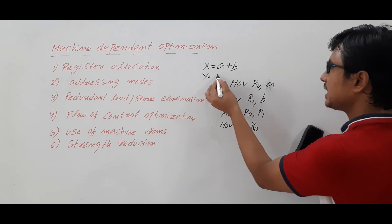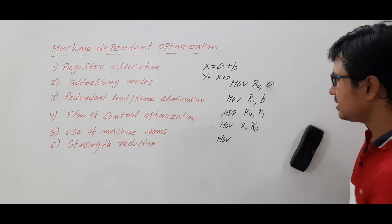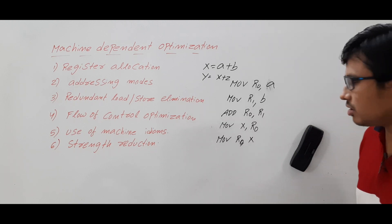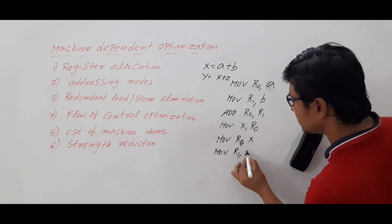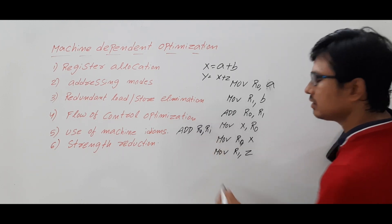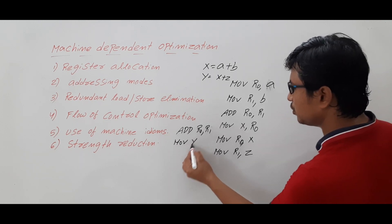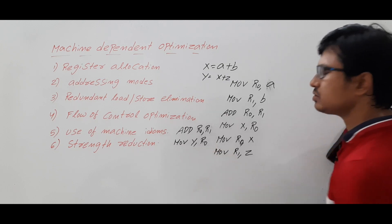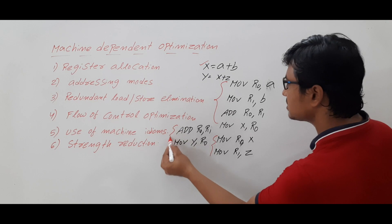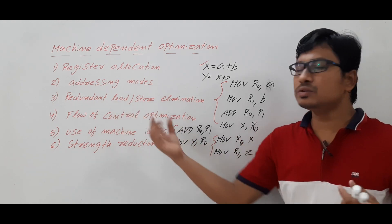Now suppose you have another instruction y = x + z. For this, you would normally write: MOVE r0, x; MOVE r1, z; ADD r0, r1; MOVE y, r0. This correctly performs y = x + z in four instructions. So individually, the first four instructions perform x = a + b and the next four instructions perform y = x + z. But can we reduce the number of instructions?